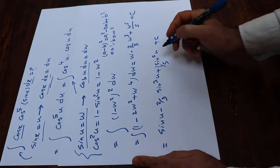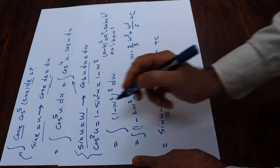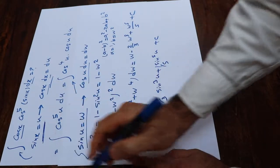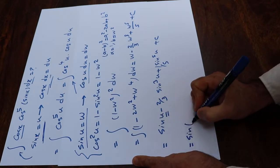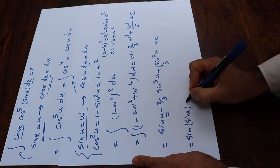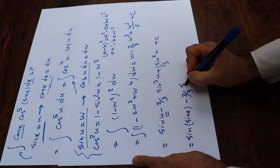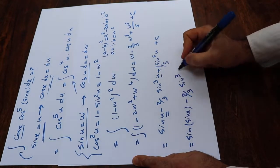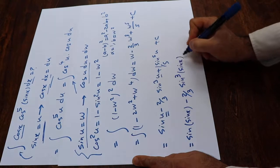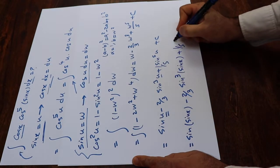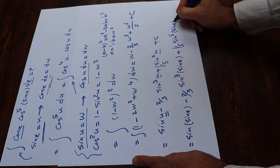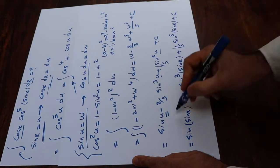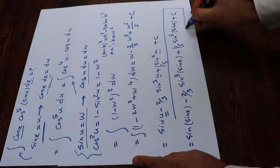Now you need to substitute this parameter u with the definition of u, which was given at the very beginning, that is sin(x). So that will be equal to sin(sin(x)) minus 2sin³(sin(x))/3 plus sin⁵(sin(x))/5 plus c. And that is the solution to our integral.